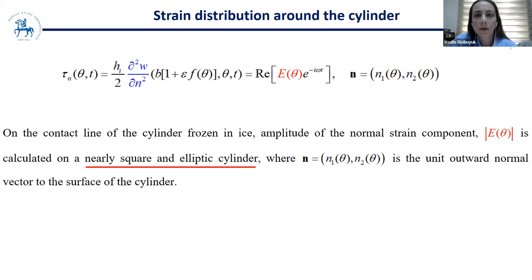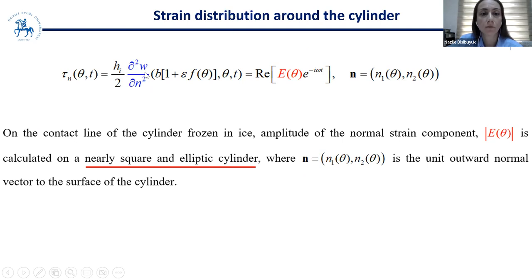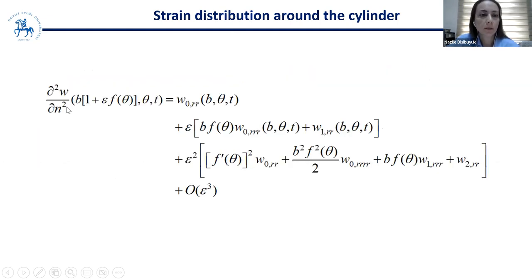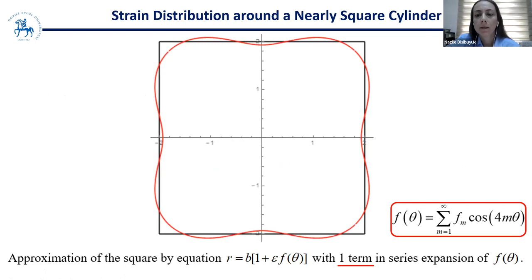We calculated the strain distribution around the cylinder, which is important for estimating the possibility of ice breaking. The normal strain component is given by the second normal derivative of the deflection at the contact line. We calculated the amplitude of the normal strain component on the nearest square and elliptic cylinders. The second normal derivative of the ice deflection at the contact line is given asymptotically by these formulas, which we use for the calculations.